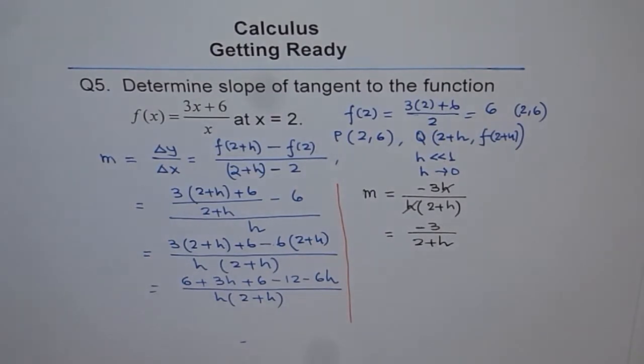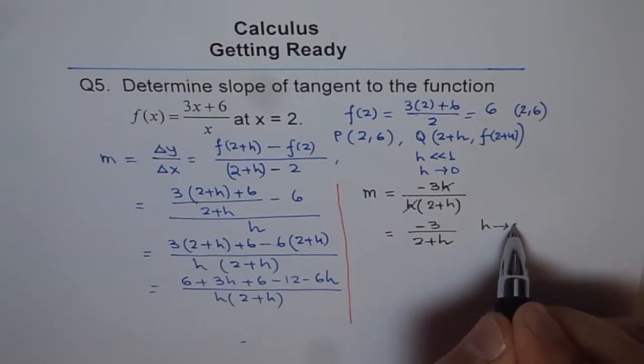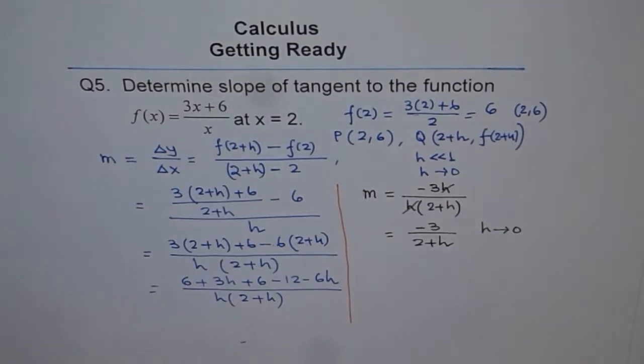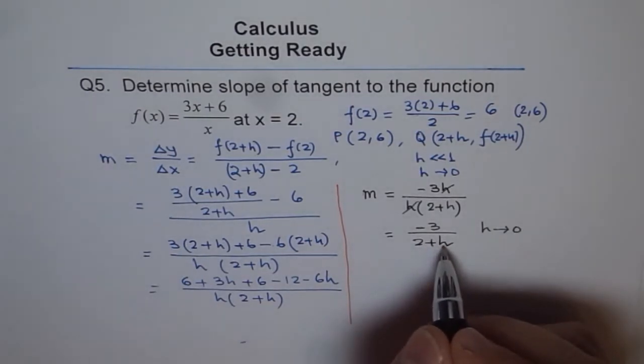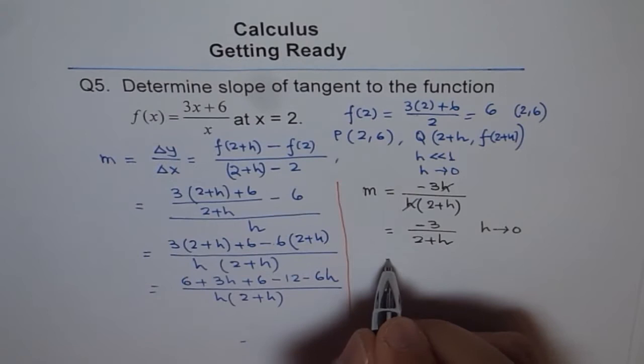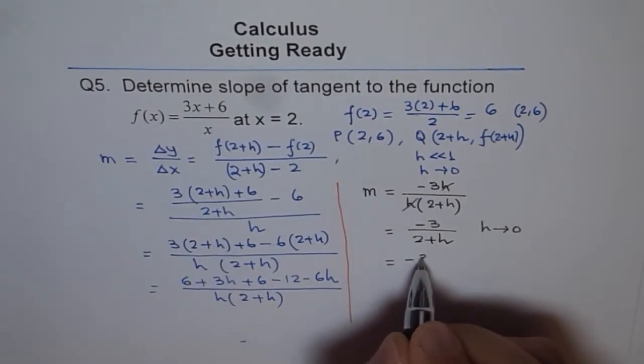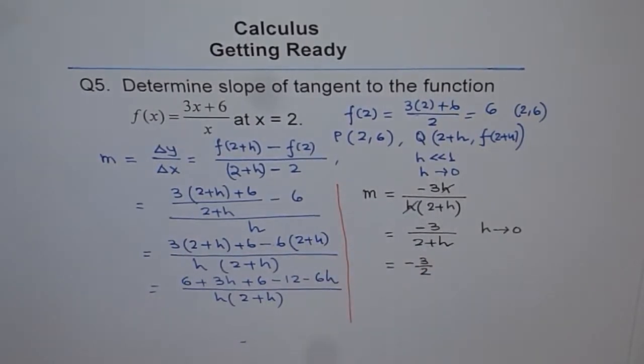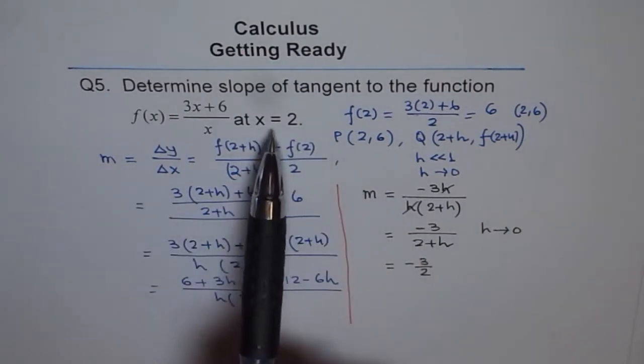Now if h is very very close, that means we are saying h is 0.0001, think like this. Very very close. In that case, h is almost 0. So we can put a value 0 for our work. And then we say -3 over 2. So that becomes the slope of the tangent at x equals 2.